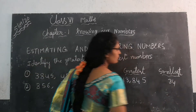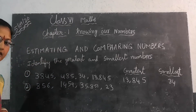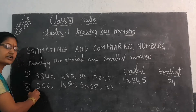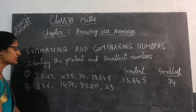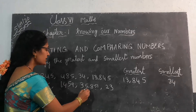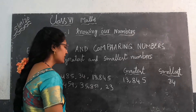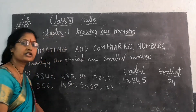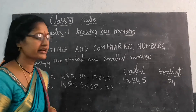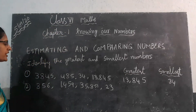In the second row, read the numbers, children, one by one. 856. This number is 1,459. This is 35,851. This is 23. Now, what we have to do with this row — first, we have to identify the greatest and smallest number. In this row, we have to find the greatest.